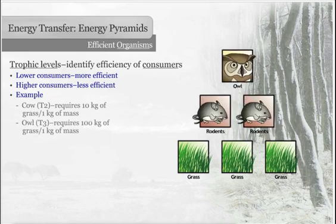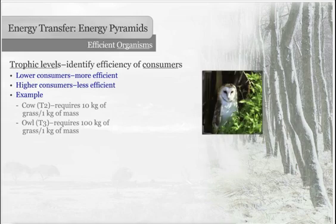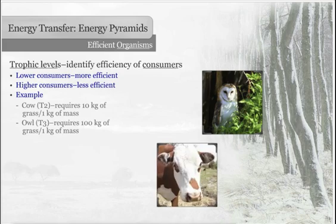Owls are secondary consumers, level T3. To maintain each kilogram of mass, the owl must consume 10 kilograms of field mice, and each mouse must consume 10 kilograms of grass. That means one kilogram of owl is supported by 100 kilograms of grass, compared to the 10 kilograms of grass needed to support the cow. The owl is a less efficient consumer than the cow.